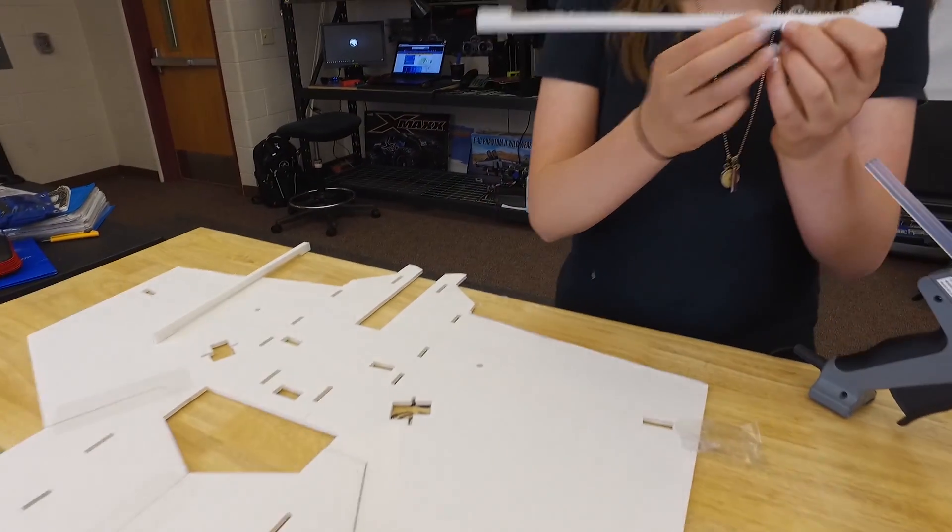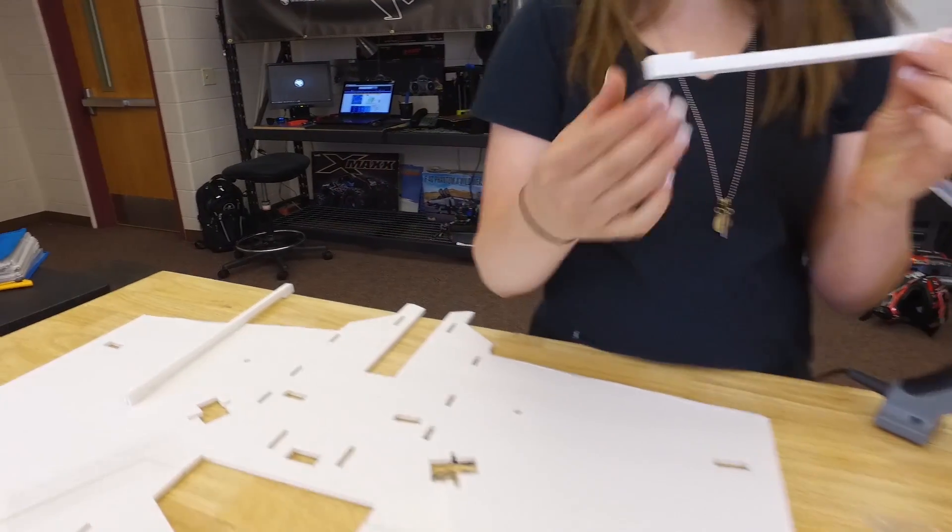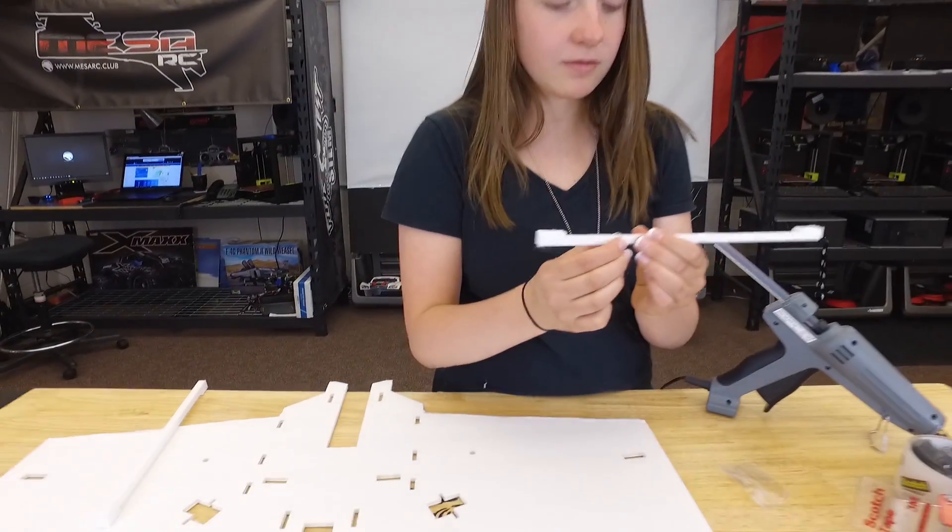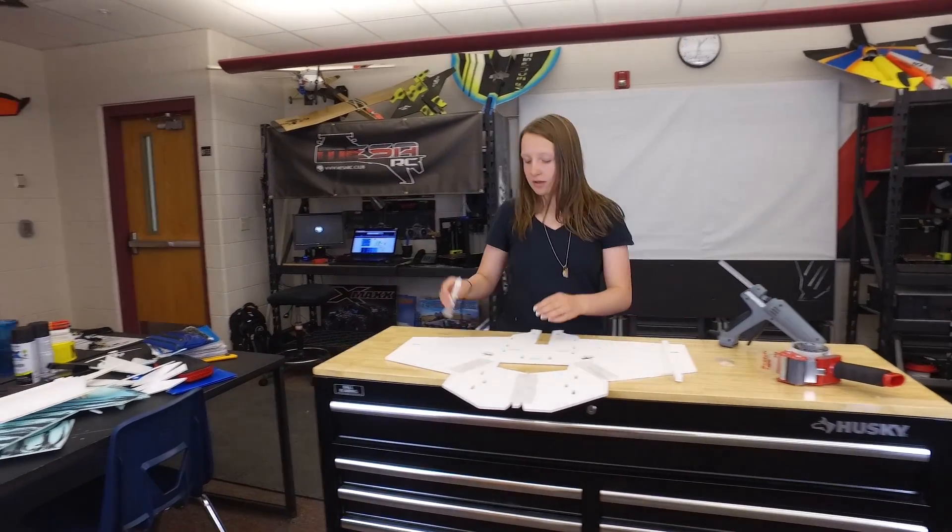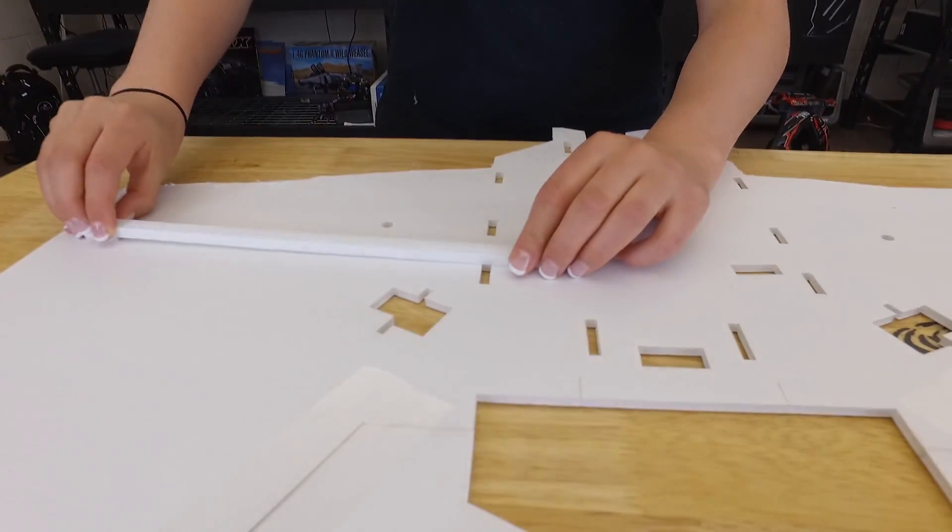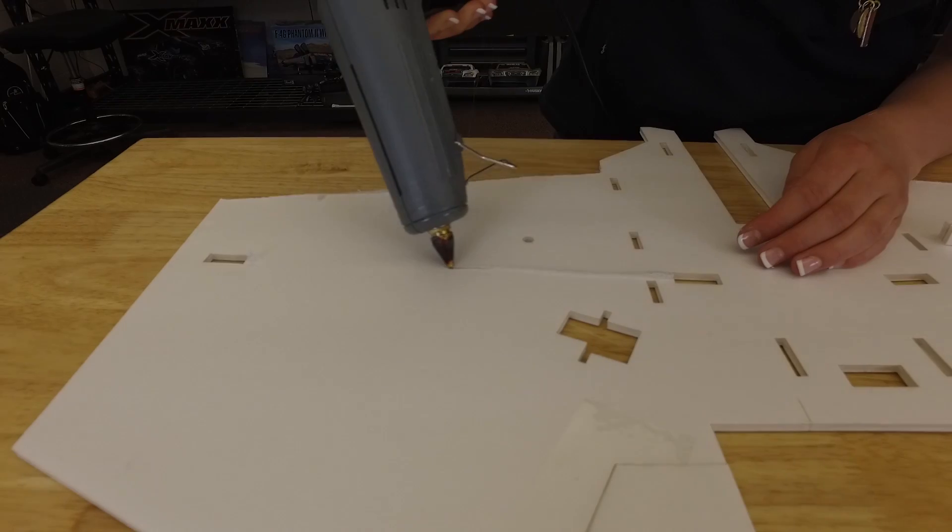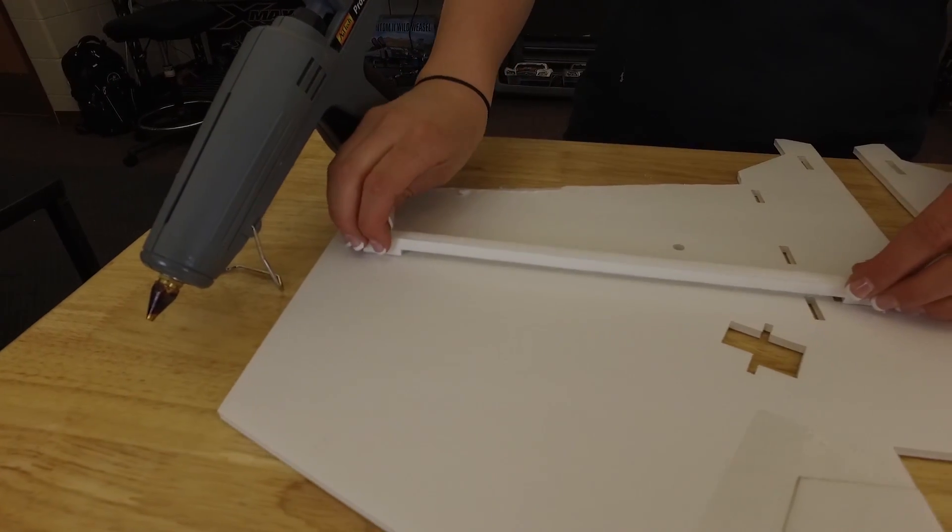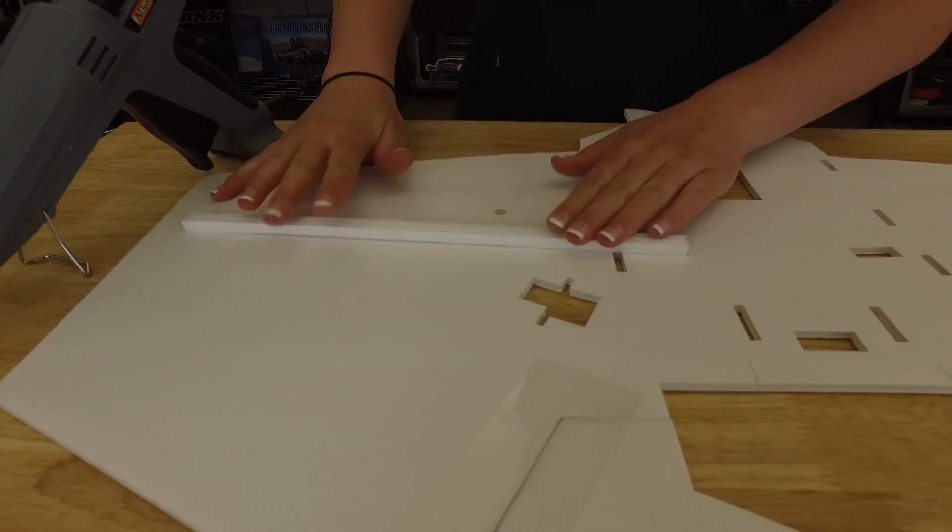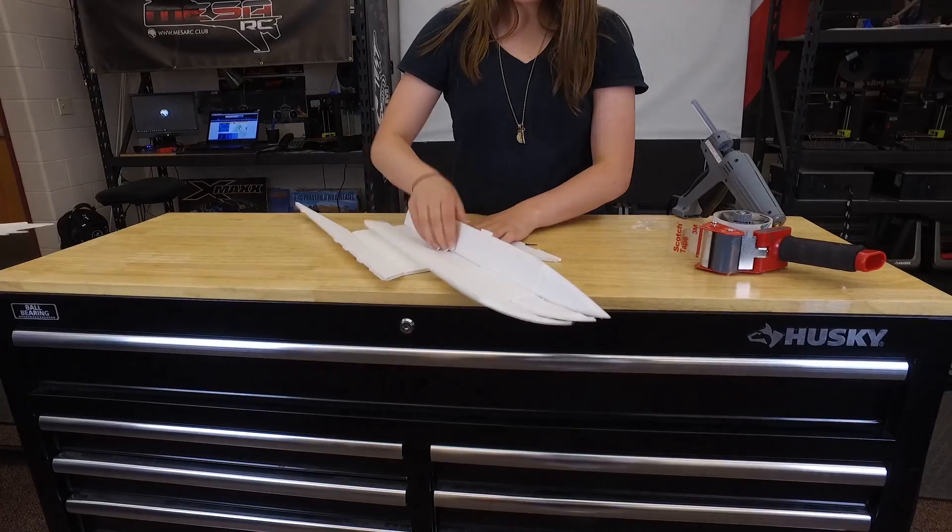Sandwich them together. And if you have any glue pop out, take an extra piece of tape or extra piece of foam board and wipe it away. You don't want to burn yourself. And then you're going to put them in these holes right here. So what I usually do is put a thin layer or thin line of glue right in the middle of them and then push them down. Make sure it's securely in there and then do the other side.